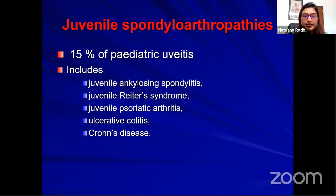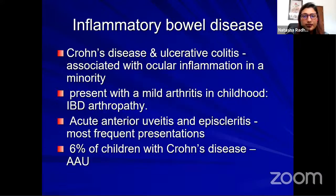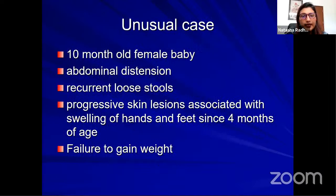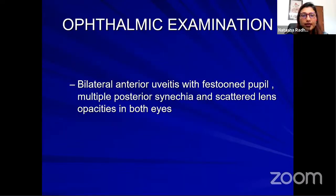Topical medications have only an adjunctive role in JIA uveitis; if more than 3 drops of topical steroids are needed for more than 3 months, systemic immunosuppression is required. Spondyloarthropathies contribute 15% of pediatric uveitis, including juvenile reactive arthritis, juvenile psoriatic arthritis, ulcerative colitis, and Crohn's disease — boys more commonly affected over 8 years of age, acute recurrent bilateral uveitis, most HLA-B27 positive. Inflammatory bowel disease in children presents with acute anterior uveitis and episcleritis; 6% of children with Crohn's disease have acute anterior uveitis.